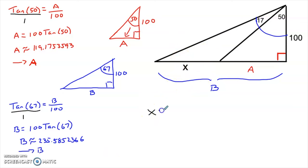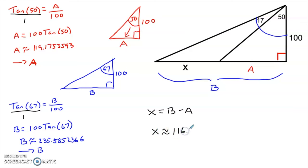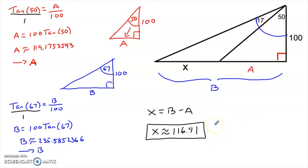In order to find x, we simply note that x is b minus a. If you've stored those values in your calculator, you can type b minus a. We get x approximately 116.41. I don't have any rounding instructions here, so I'm just rounding to something that seems reasonable. Always follow rounding instructions in the problem.